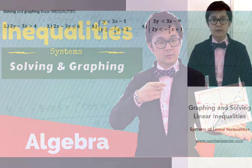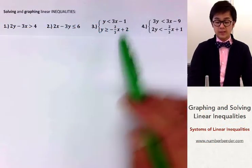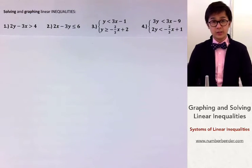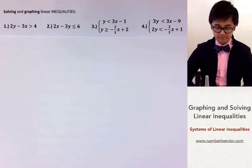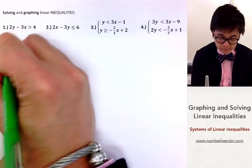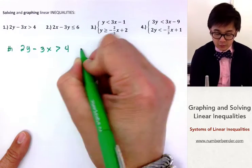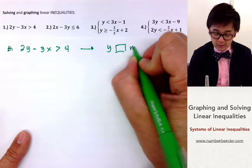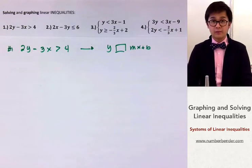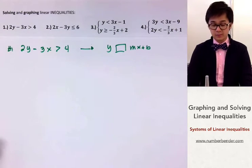Today we're going to be working on the graph of linear inequalities — singular inequalities and systems of linear inequalities. So let's go ahead and start with problem number one. Problem number one: we have 2y minus 3x greater than 4. We need to change this into y inequality mx plus b form, similar to graphing a linear equation but using the inequality symbol. The box represents the inequality symbol.